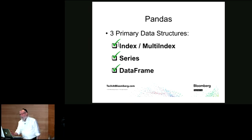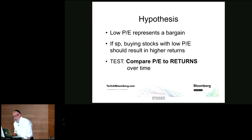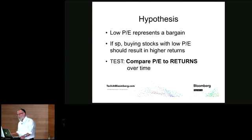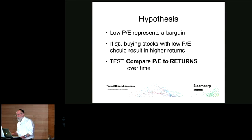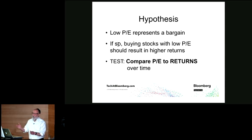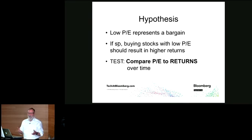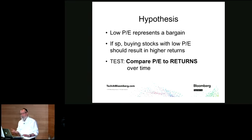Now we understand the three primary data structures of Pandas. Back to our hypothesis: the idea is that a low price-earnings ratio represents a bargain. If so, then buying stocks with a low P/E should result in higher returns. We want to compare the P/E ratio to the returns, and we hope to find a negative correlation — when the P/E is low, we expect the returns to go up.